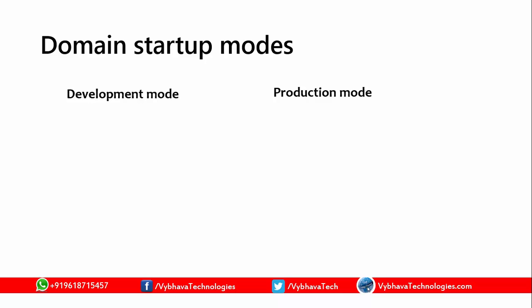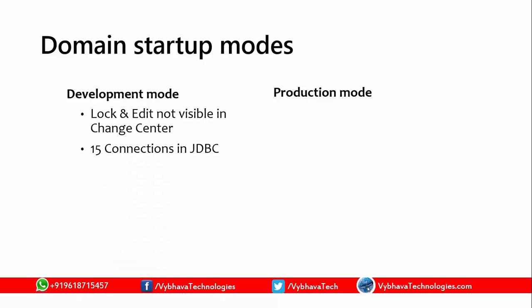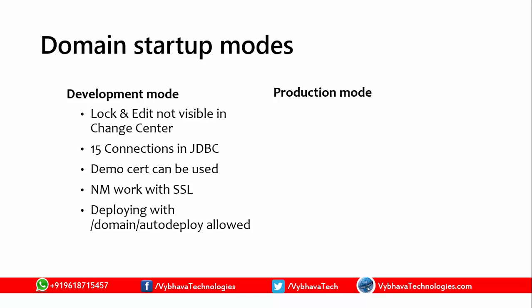Domain startup modes: there are two options — development mode and production mode. This is an important interview question. In development mode, the lock and edit button is hidden and not visible. There is only a limited number of users, so fewer database connections. In development, you use only demo certificates — real certificates are not required. Node manager can run based on SSL. Auto deploy is enabled: applications are deployed automatically, and any changes are reflected immediately after about three seconds. A 500 KB log will be generated for the development domain.